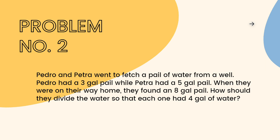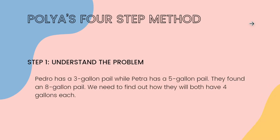Again, we will implement Polya's four-step method. In understanding the problem, Pedro has a three gallon pail while Petra has a five gallon pail. They then found an eight gallon pail and now need to find a way so that both of them can have four gallons each.